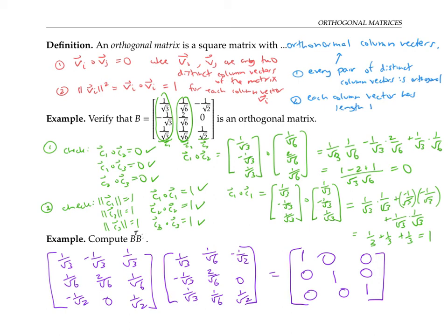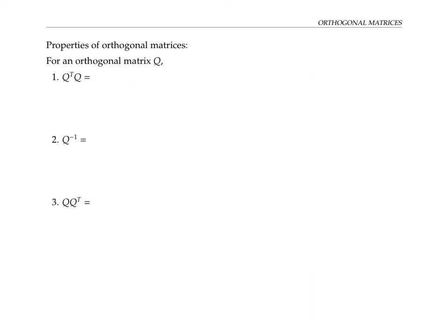In fact, the same reasoning shows that for any orthogonal matrix, when we take the transpose and multiply by the matrix itself, we always get the identity matrix. That's our first nice property: if Q is an orthogonal matrix, then Q transpose times Q equals the identity. Another way of saying the same thing is that the inverse of an orthogonal matrix is just its transpose, since inverses are unique — any matrix that times Q gives the identity must be the inverse of Q.